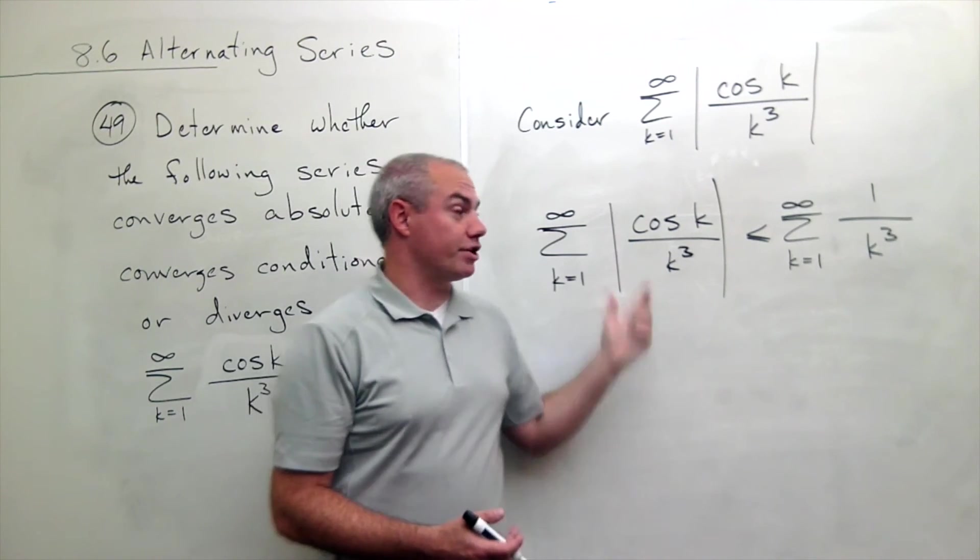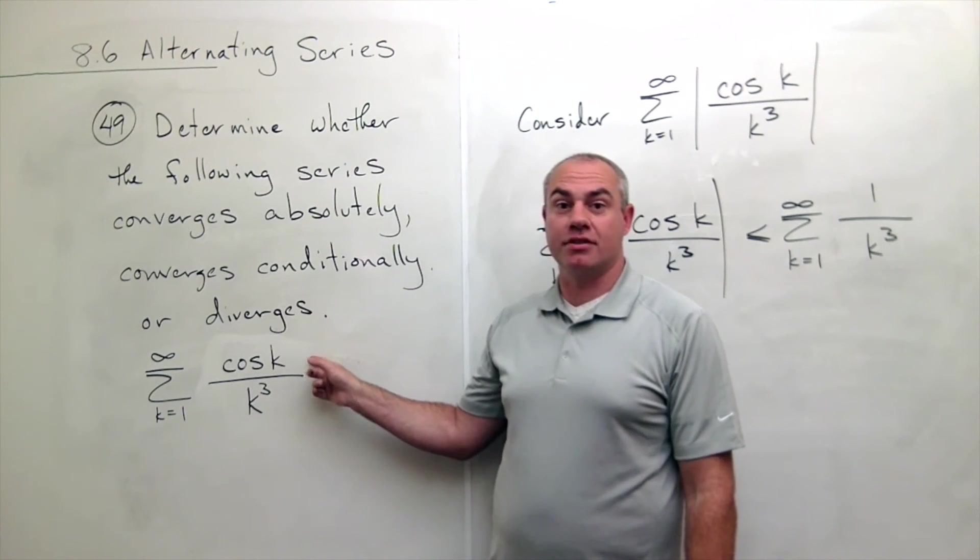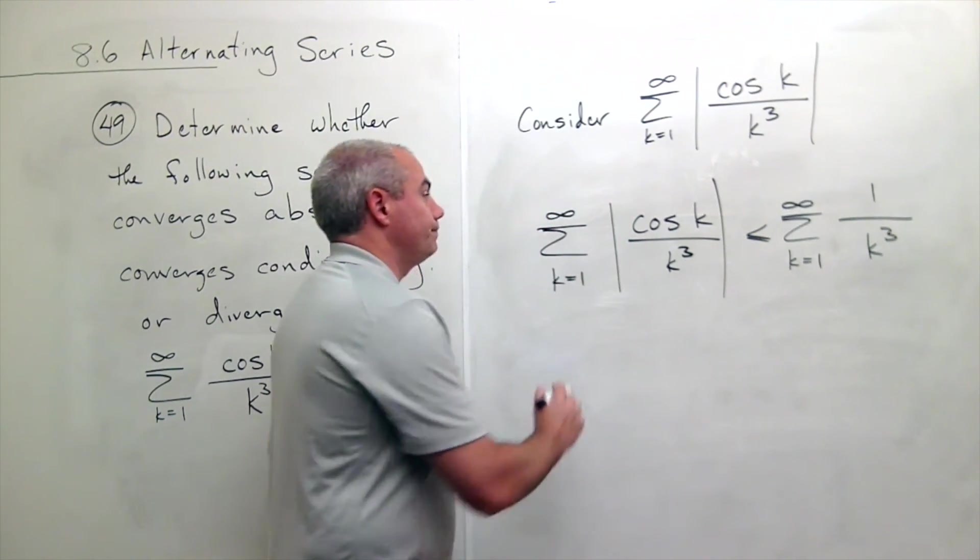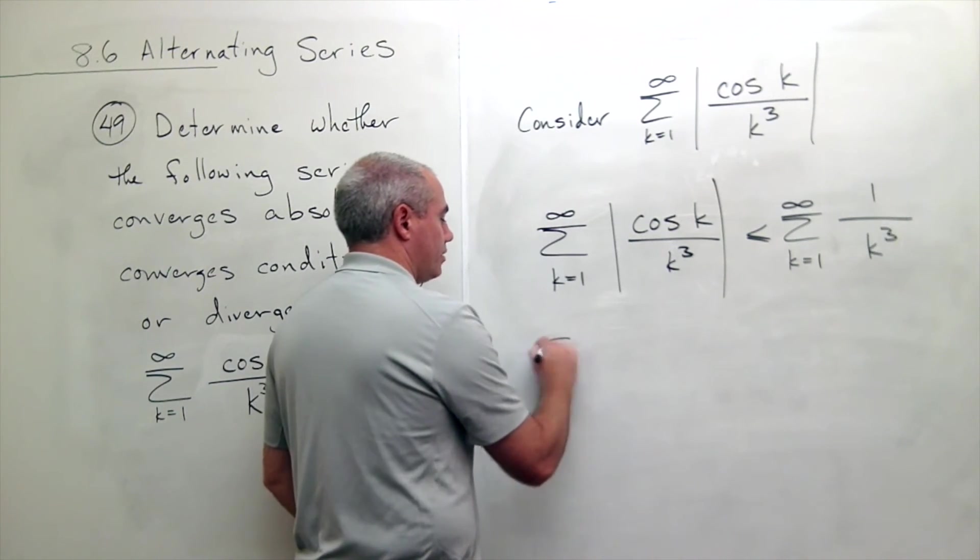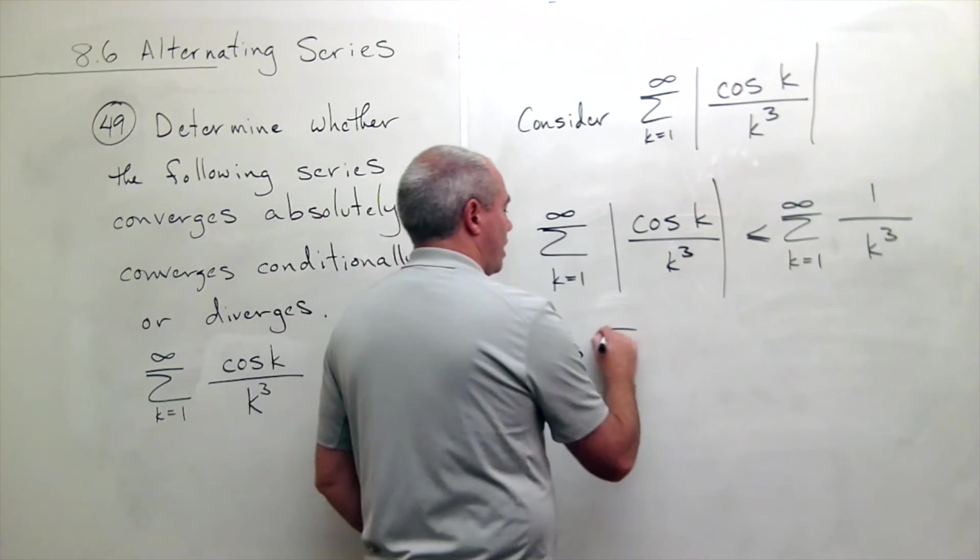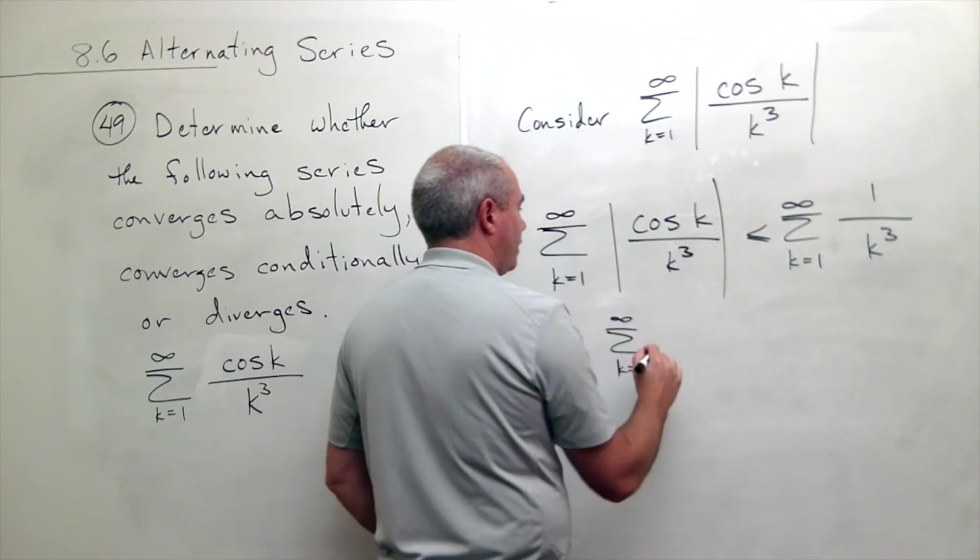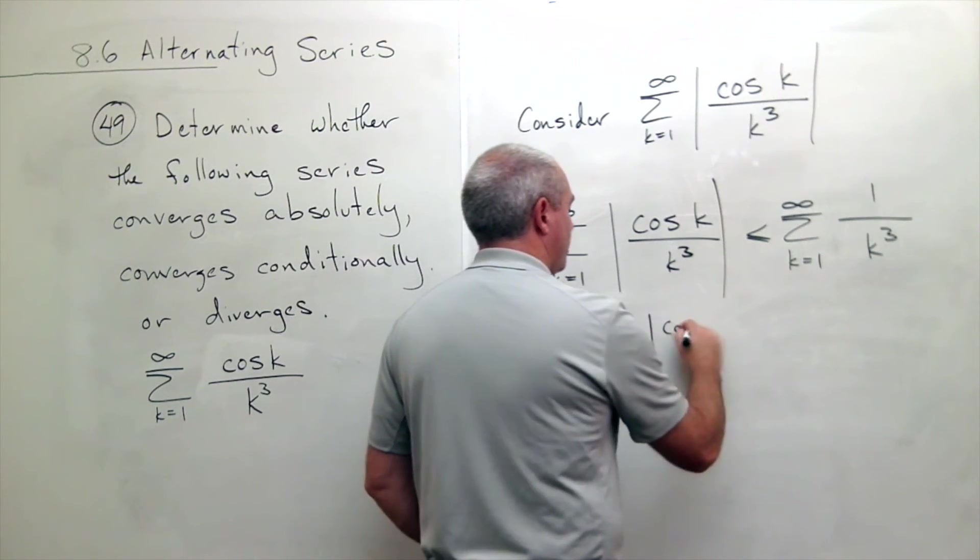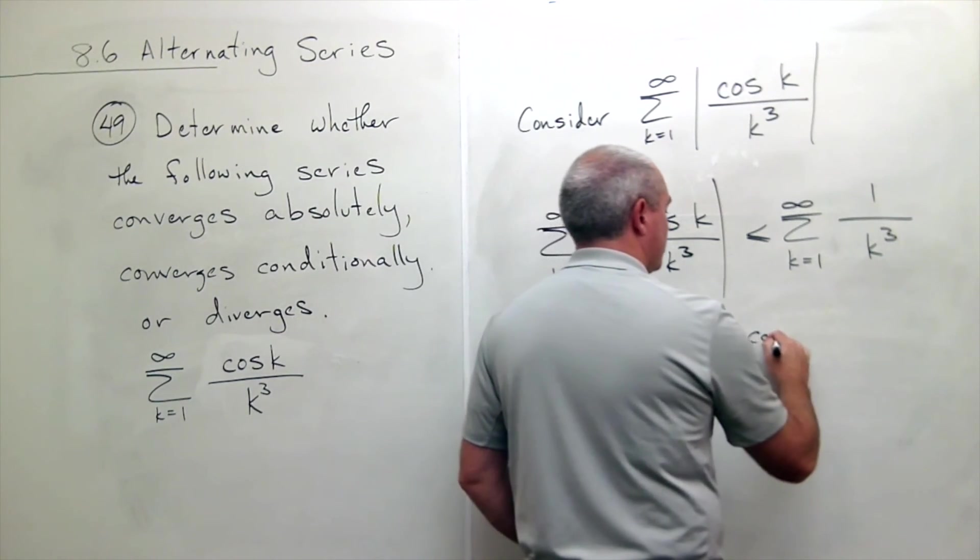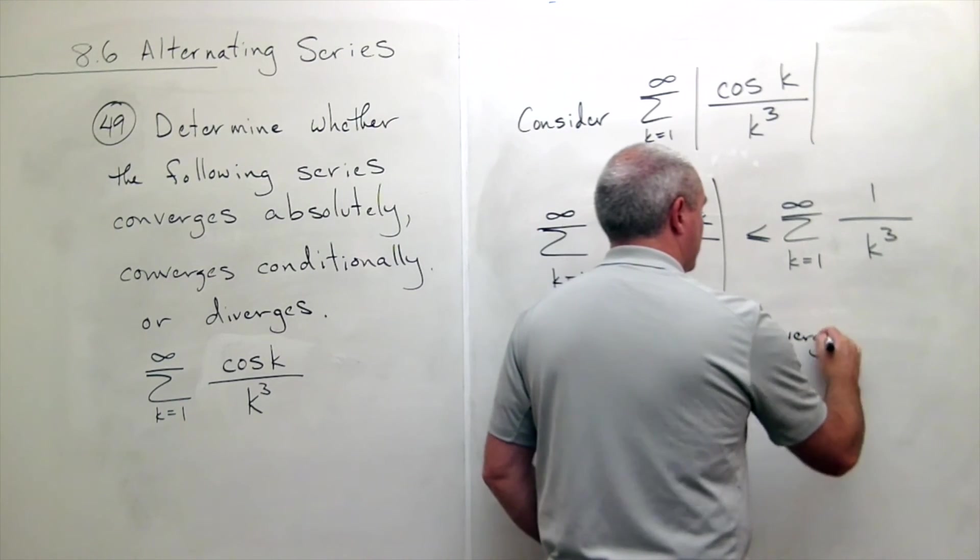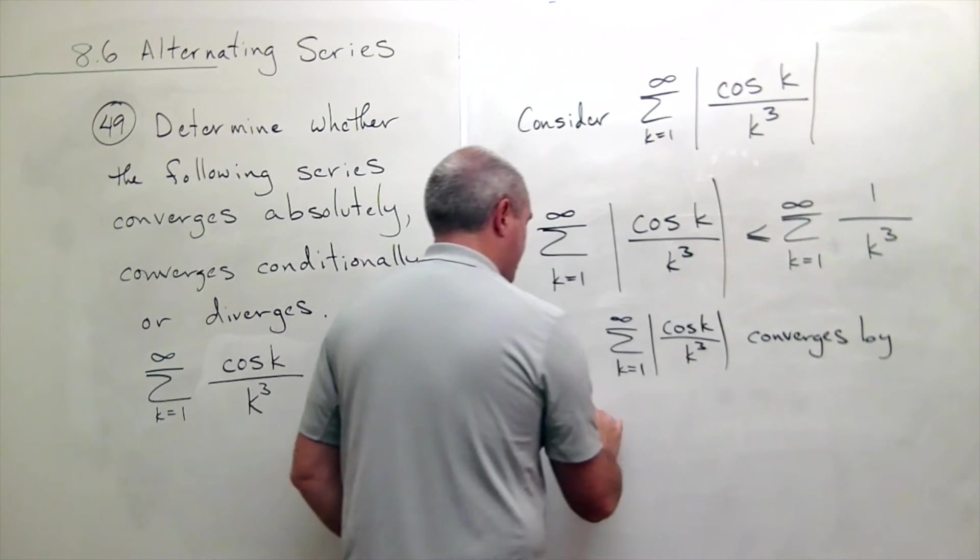Since this guy converges, we can say that this one converges absolutely. So what I'll write in conclusion is: sum k going from 1 to infinity of absolute cosine k over k cubed converges by a comparison test.